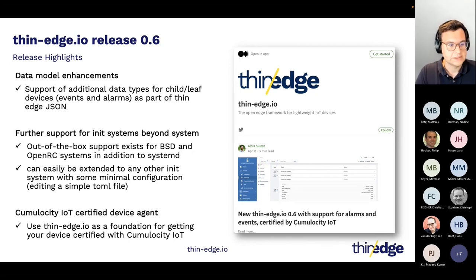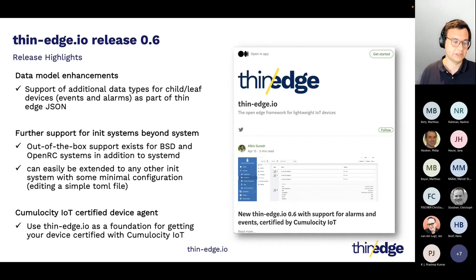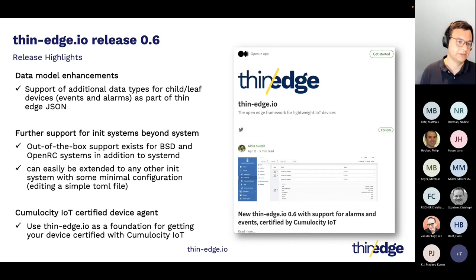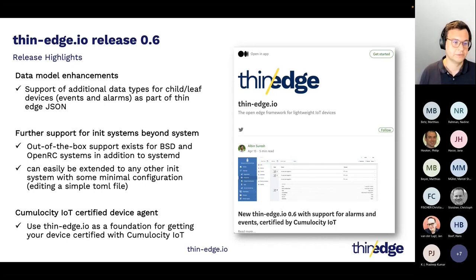Another piece of feedback we received was support for different Linux systems and architectures. We try to be as flexible as possible to deploy to as many devices and architectures as possible. We did some improvements when it comes to init systems — we use systemd as a default, but this can now be easily extended so you can run ThinEdge on other operating systems and embedded Linux systems, configurable in a simple configuration file.